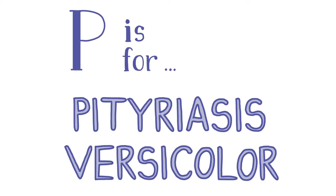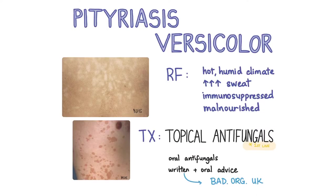P is for pityriasis versicolor. This is a superficial cutaneous yeast infection commonly affecting healthy younger people, in particular those in hot humid climates and those who perspire heavily. Well-demarcated macules and patches of altered pigmentation are seen primarily on the trunk, associated with pruritus and some scales. People who are immunosuppressed or malnourished are at a higher risk. Topical antifungals are used as the first-line treatment.